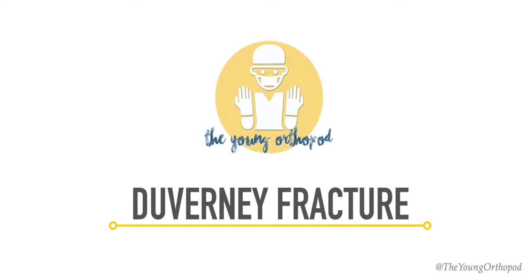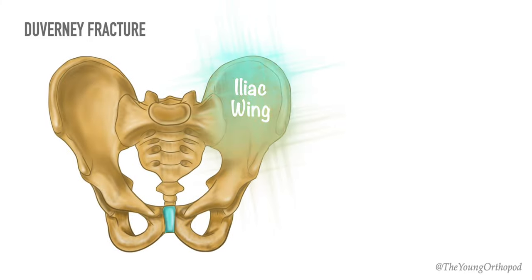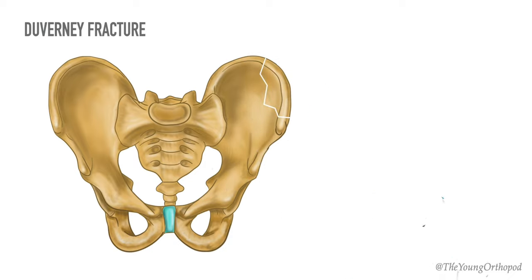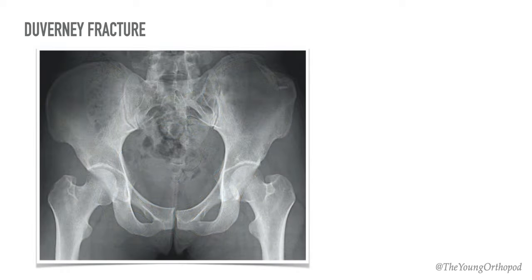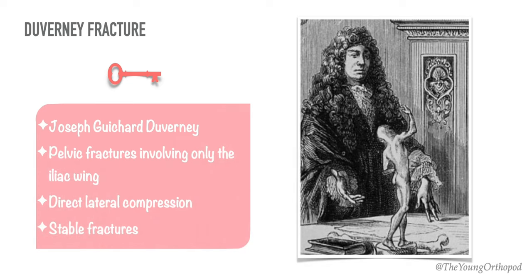Let's begin with the Duverney fracture. The Duverney fracture is an isolated fracture of the iliac wing due to direct lateral compression force. They are generally stable fractures as they do not disrupt the weight-bearing pelvic ring. In this AP radiograph, you can see the isolated fracture of the iliac wing. It is named after Joseph Guichard Duverney, a French anatomist and surgeon.